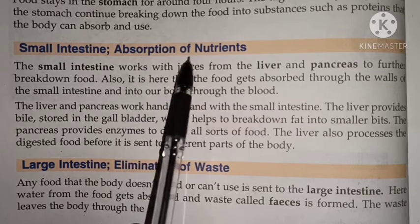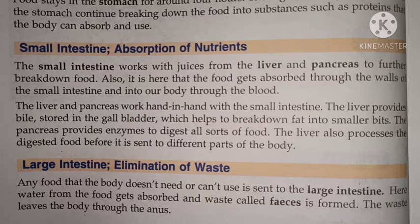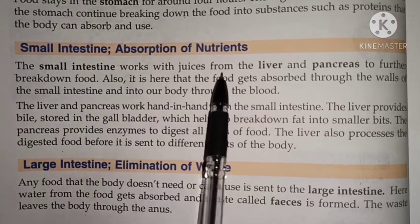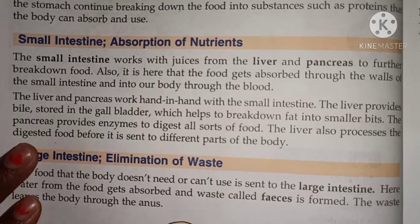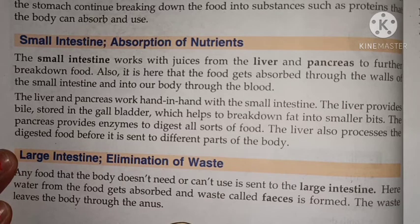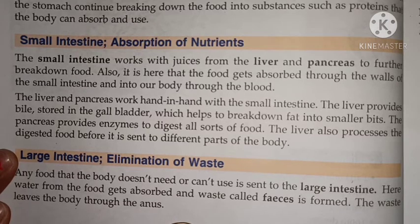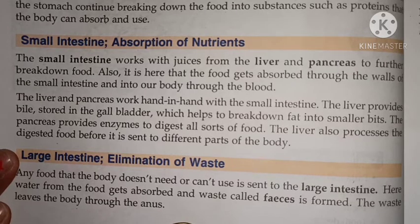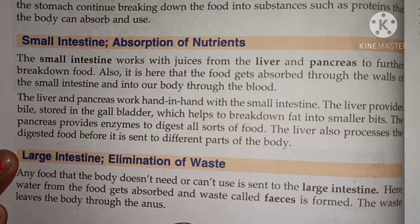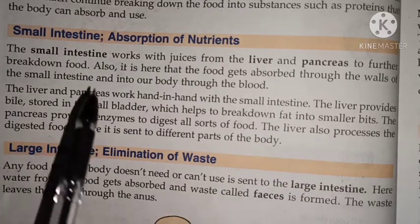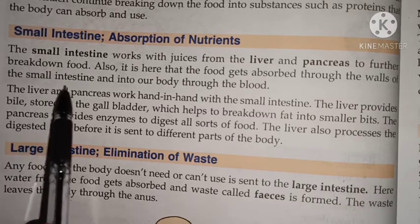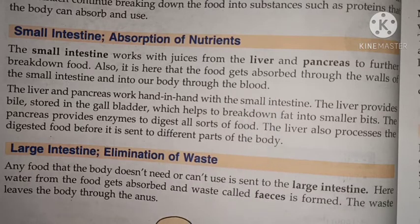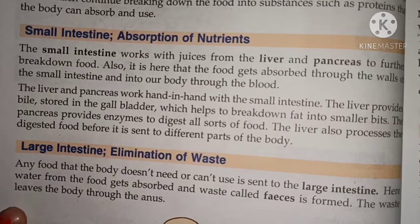Next is small intestine — absorption of nutrients. The small intestine works with juice from the liver and pancreas to further break down food. It is here that the food gets absorbed through the walls of the small intestine and into our body through the blood.